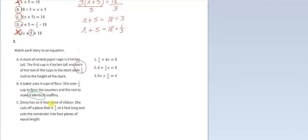Elena has an eight-foot piece of ribbon, and she cuts off a piece that is a quarter of a foot long, and cuts the remainder into four pieces. So cutting the remainder into four pieces of equal length, that tells me there's a 4x. And part of those four equal length pieces, the quarter that was cut off, looks like it matches number one. So I'm going to say A is two, B is three, and C is number one.